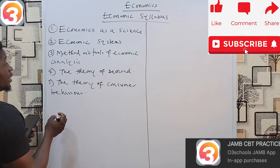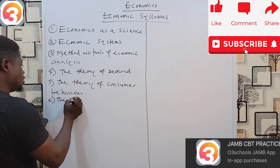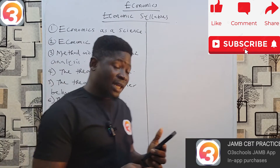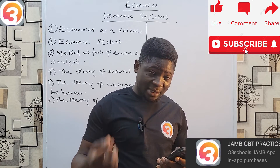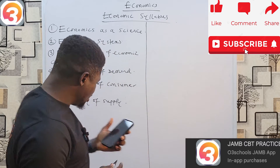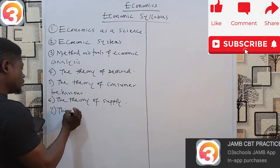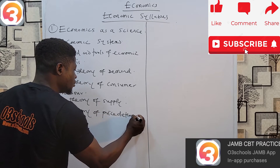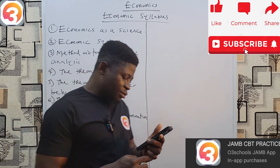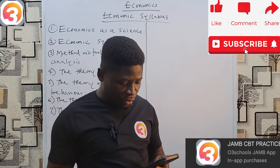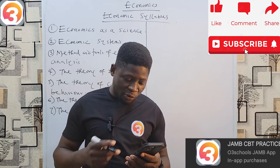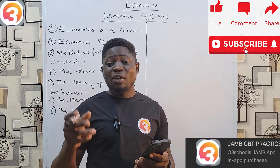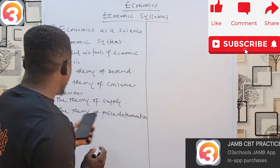Number six is the Theory of Supply. Look at the major concepts under the theory of supply, types of supply, elasticity of supply, and so on. Number seven is the Theory of Price Determination. Under this, look at the concept of market and price, functions of the price system, equilibrium price and quantity in product and factor markets, and the effects of changes in supply and demand on equilibrium price and quantity.